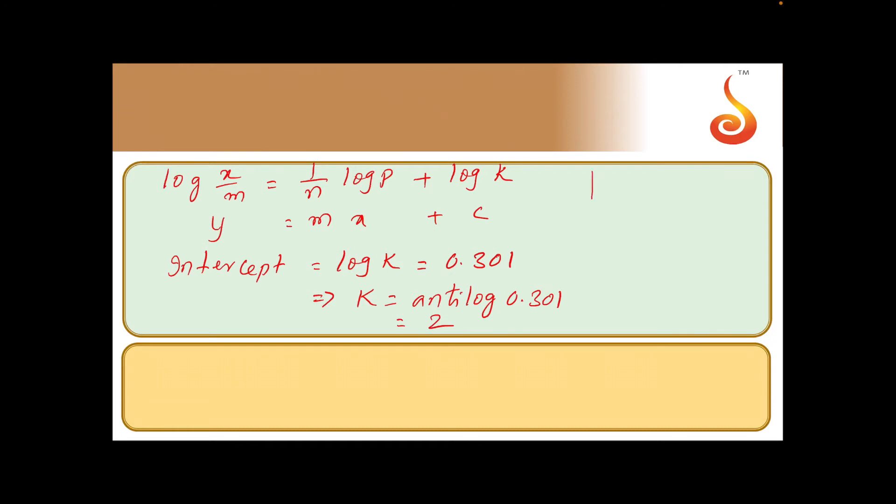Second part, slope now. Slope which is equal to 1 by n and slope is equal to tan theta. Theta is given as 45 degrees. Therefore, tan 45 which is equal to 1, so 1 by n is equal to 1, which implies n is equal to 1.